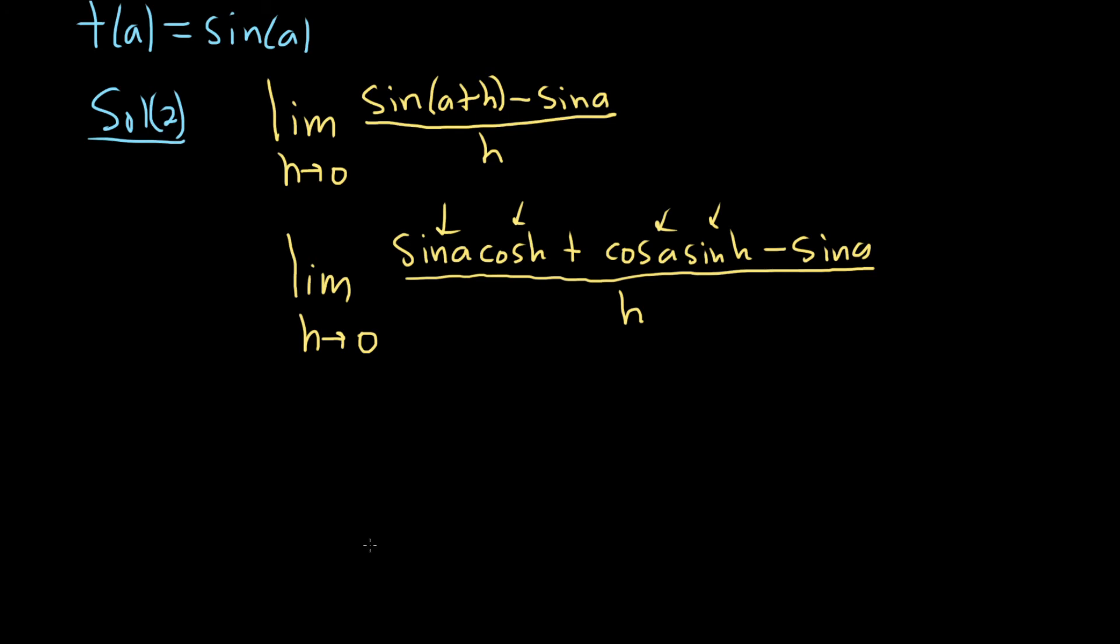So what happens here? Let's see. So it looks like we can simplify this a little bit more. This is equal to the limit as h approaches 0. Let's break this up so we can write this as, let's pull out a sine from these. Let's combine these, rather.